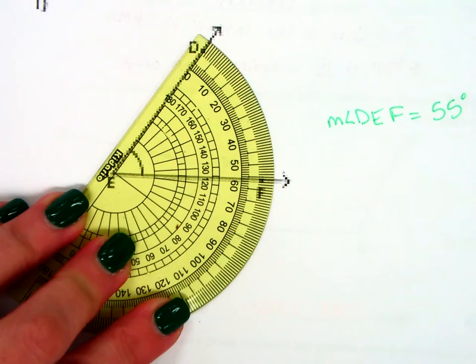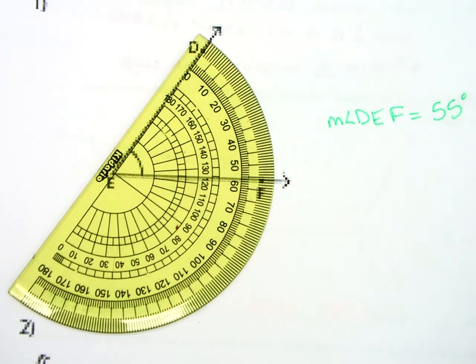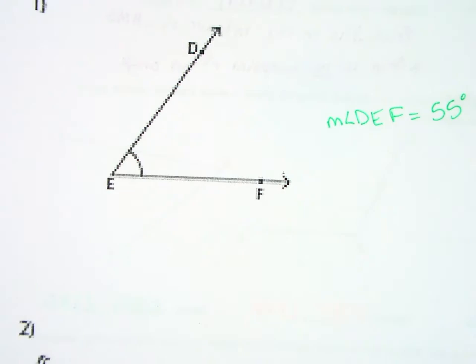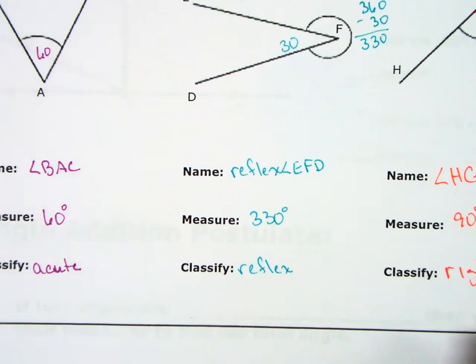If I were to turn this this way, then when I look out at my numbers, I'm not going to start at this 180. So I'm not going to use the inside numbers because we don't start counting at 180. We start counting from zero.